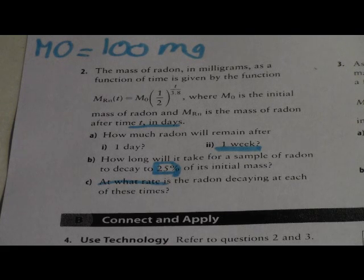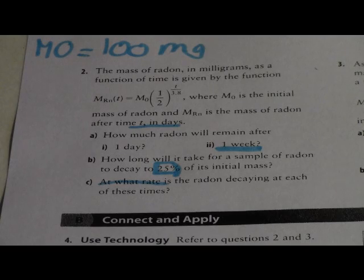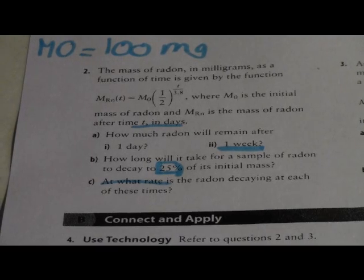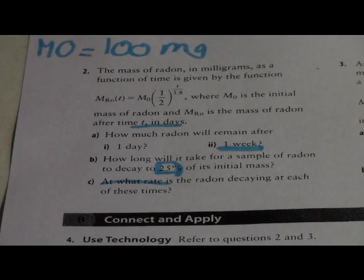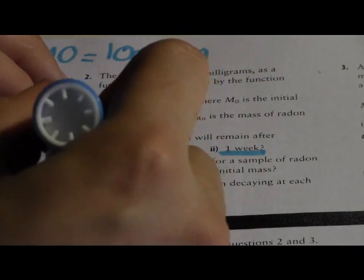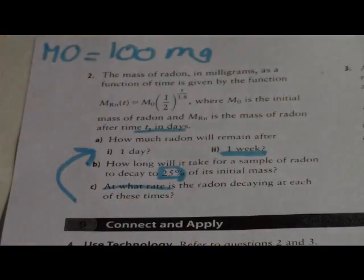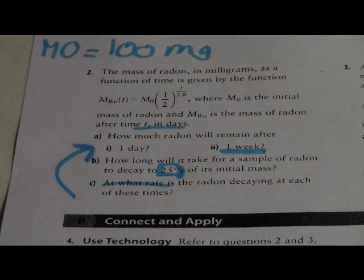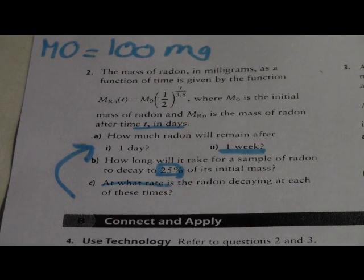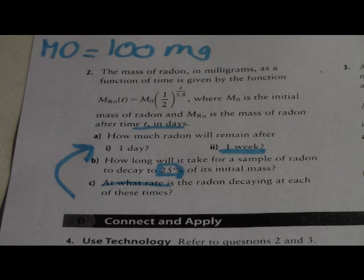For Part C, at what rate is the radon decaying at each of these times — make sure you use the time values from Part A: one day and 7 days. You find the derivative of the function and then plug these t values into the derivative equation to solve for the rate of change at those times.